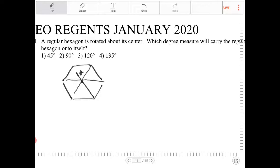Since all of those angles are going to be the same, we take 360 and divide it by 6, and that would be 60 degrees.